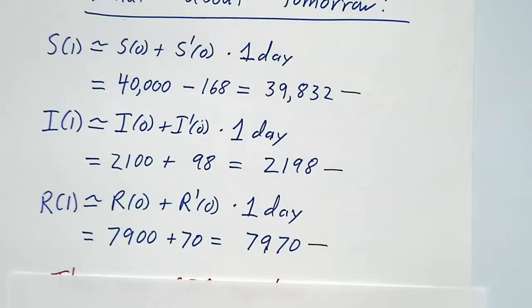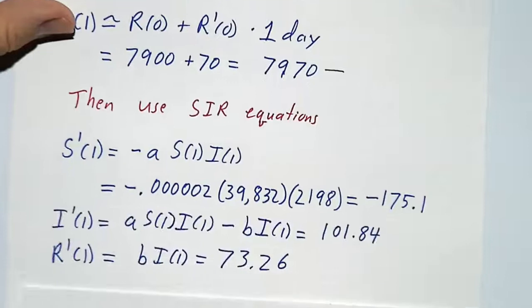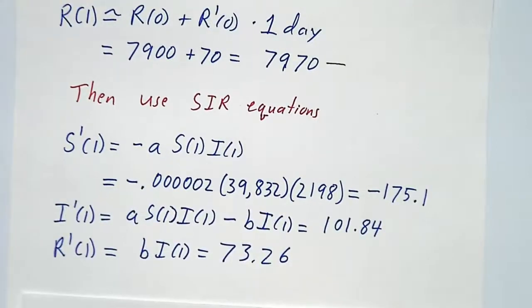What about two days from now? Well, we use the SIR equations all over again to figure out how fast things are changing one day from now. The rate at which S is changing a day from now is minus aSI, but not the starting SI, it's S and I a day from now. We plug in the numbers and we get negative 175.1.